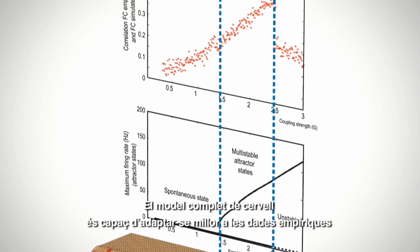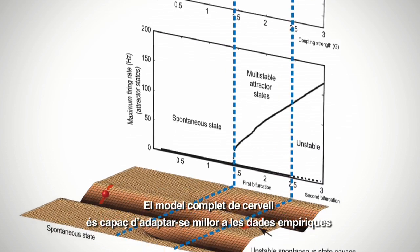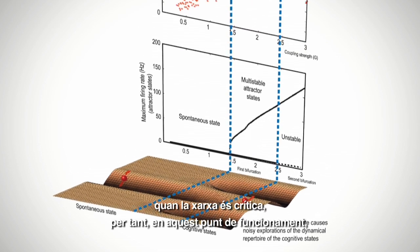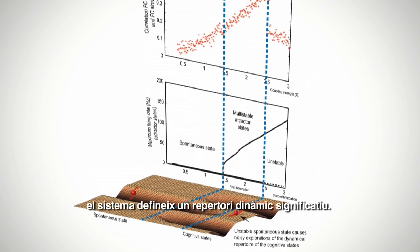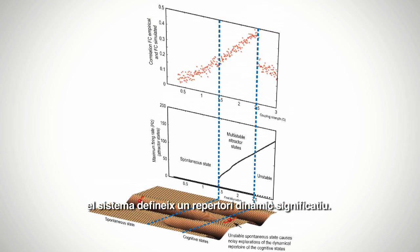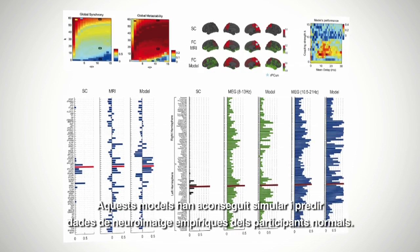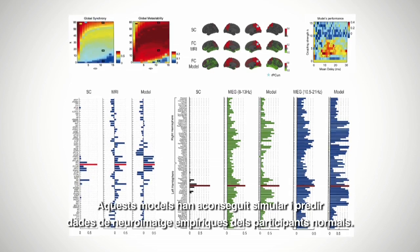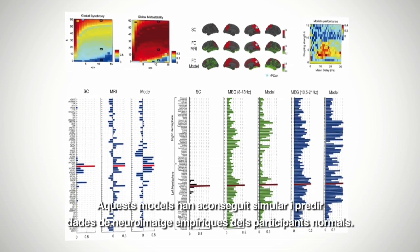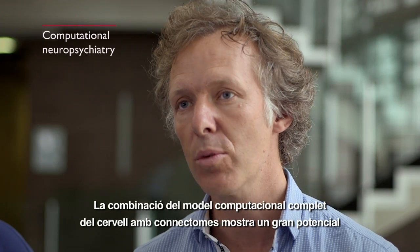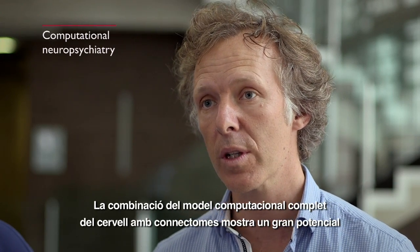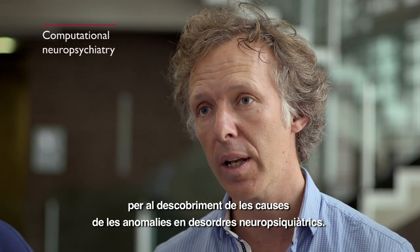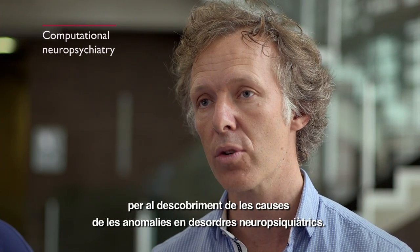The whole brain model best fits empirical data when the network is critical, so that at that operating point the system defines a meaningful dynamic repertoire. Such models have managed to simulate and predict empirical neuroimaging data from normal participants. Combining whole brain computational modelling with connectomics has shown great potential for finding out what is going wrong in neuropsychiatric disorders.